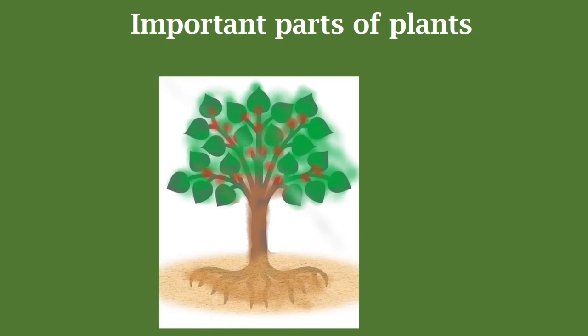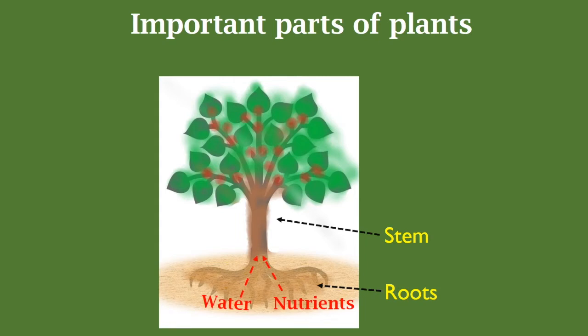Before going into detail of photosynthesis, let's understand the important parts of plants. The first part is roots. Roots absorb water and nutrients from the soil and transport them towards the stem. Roots also help the plant to stay still and upright in the soil. The second part is the stem. Water and nutrients transported from the roots are further carried by the stem to different parts of the plant.